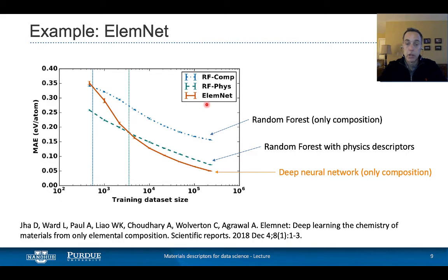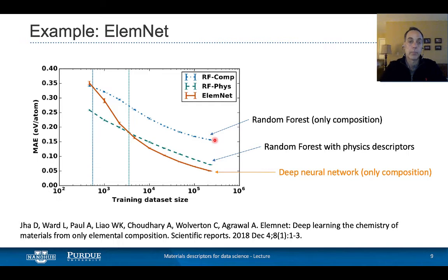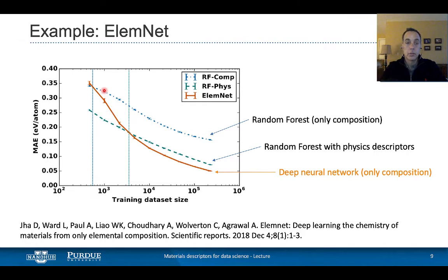This is an example of work out of Northwestern University, where they were interested in predicting cohesive energy — some kind of property — and they are comparing different approaches. If you use just out-of-the-box random forest — simple machine learning using raw data — and plot the mean absolute error as a function of the size of the training set, you can see that things get better as you have more data. But you can do a whole lot better by training the random forest with physics-based descriptors.